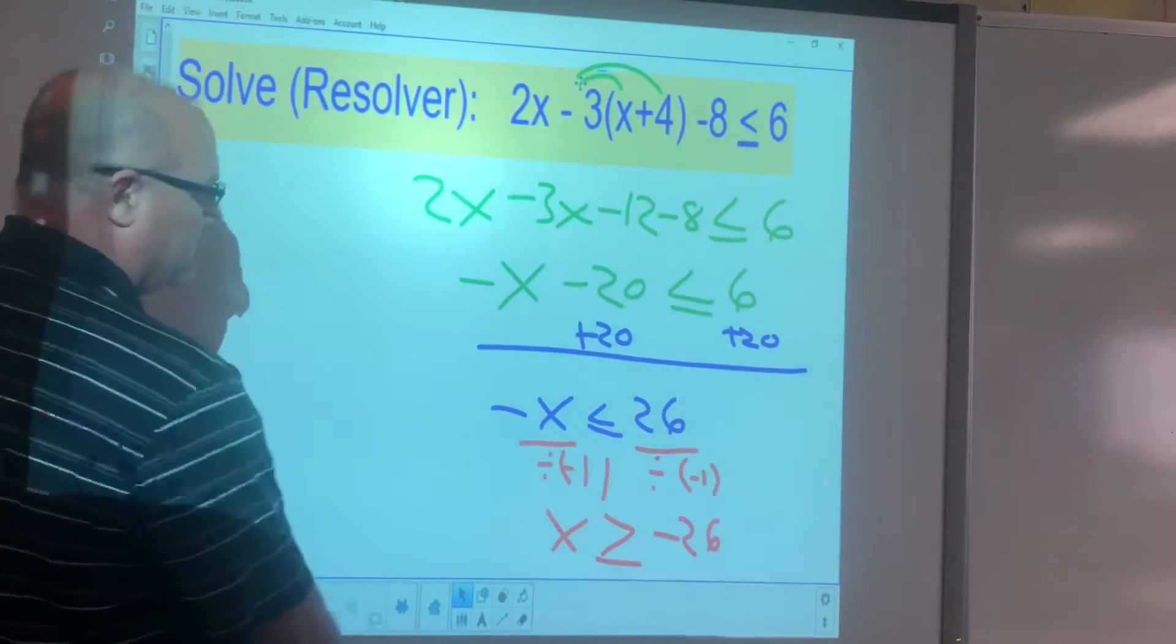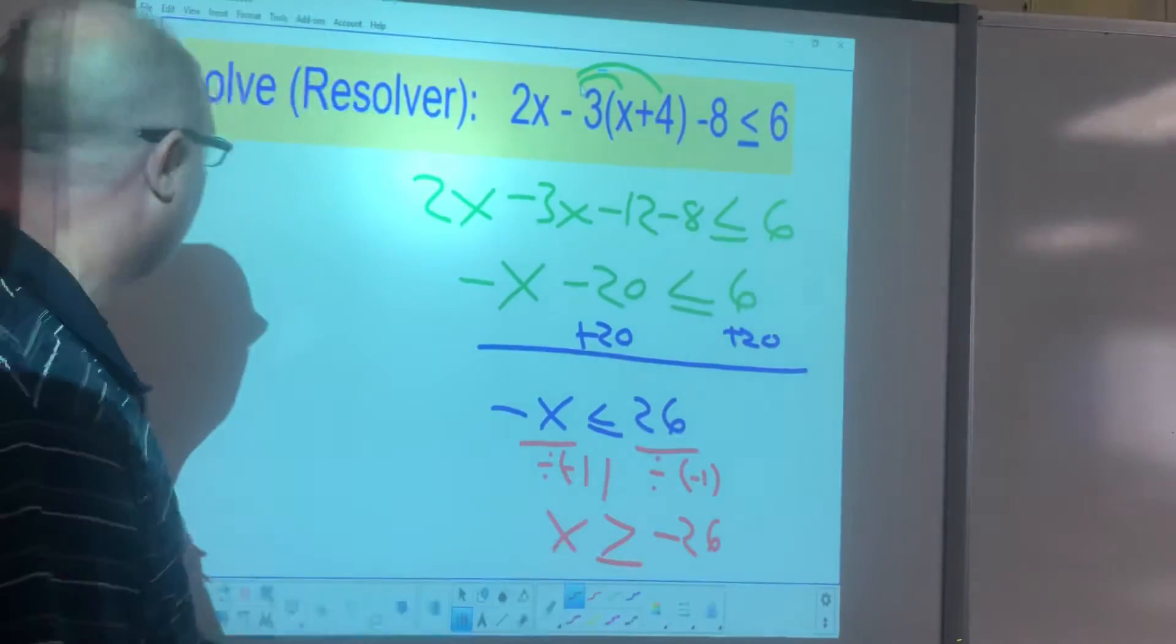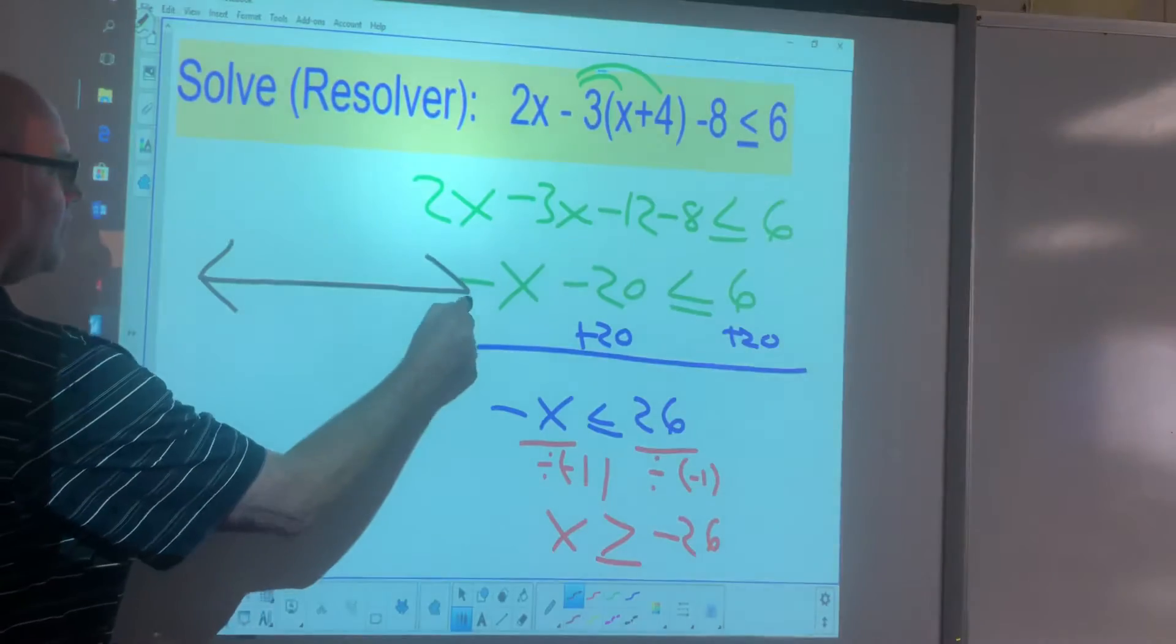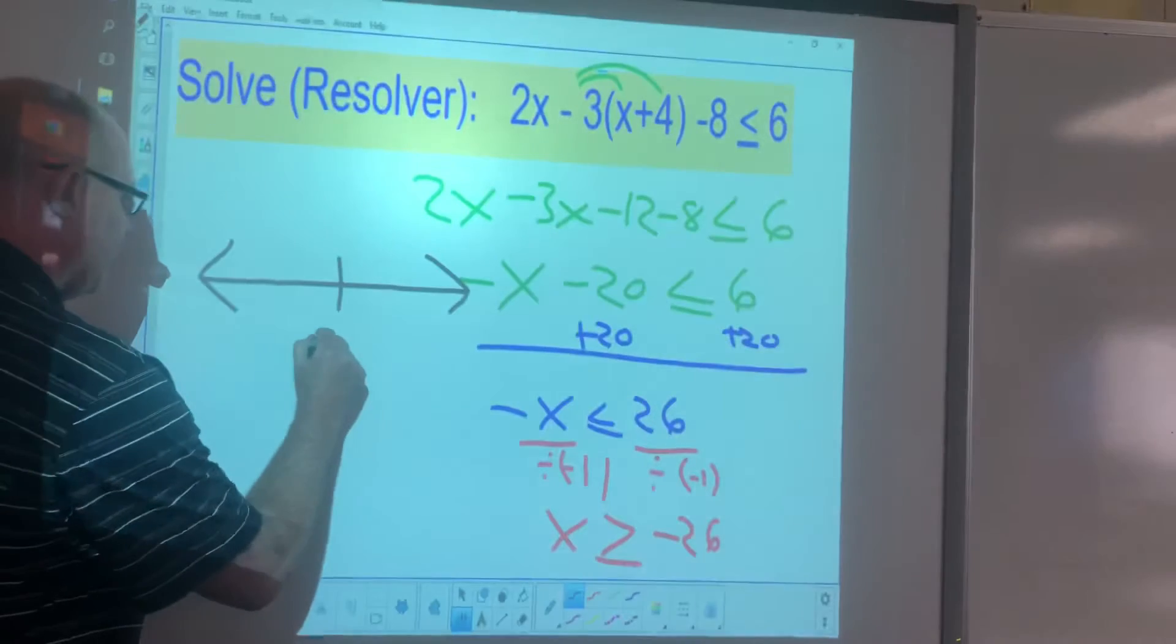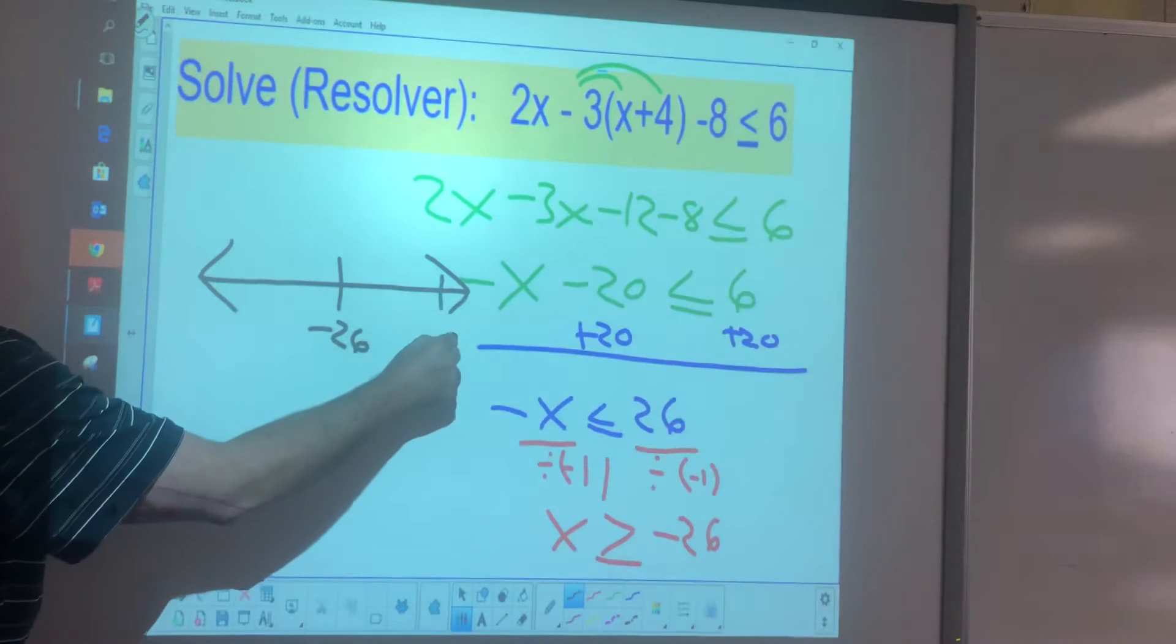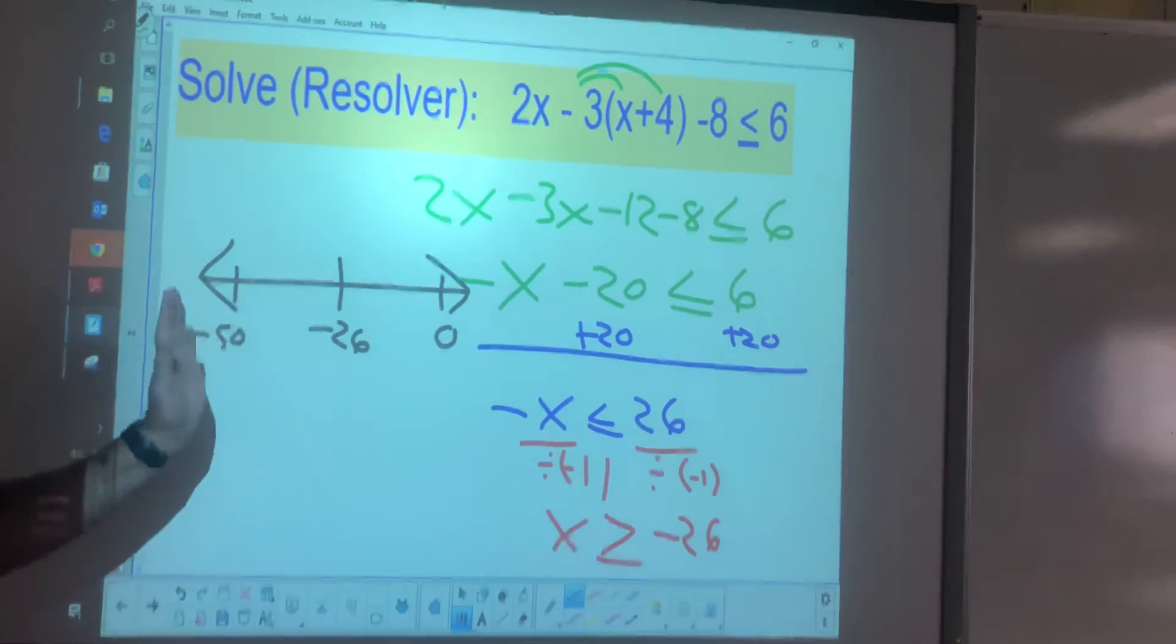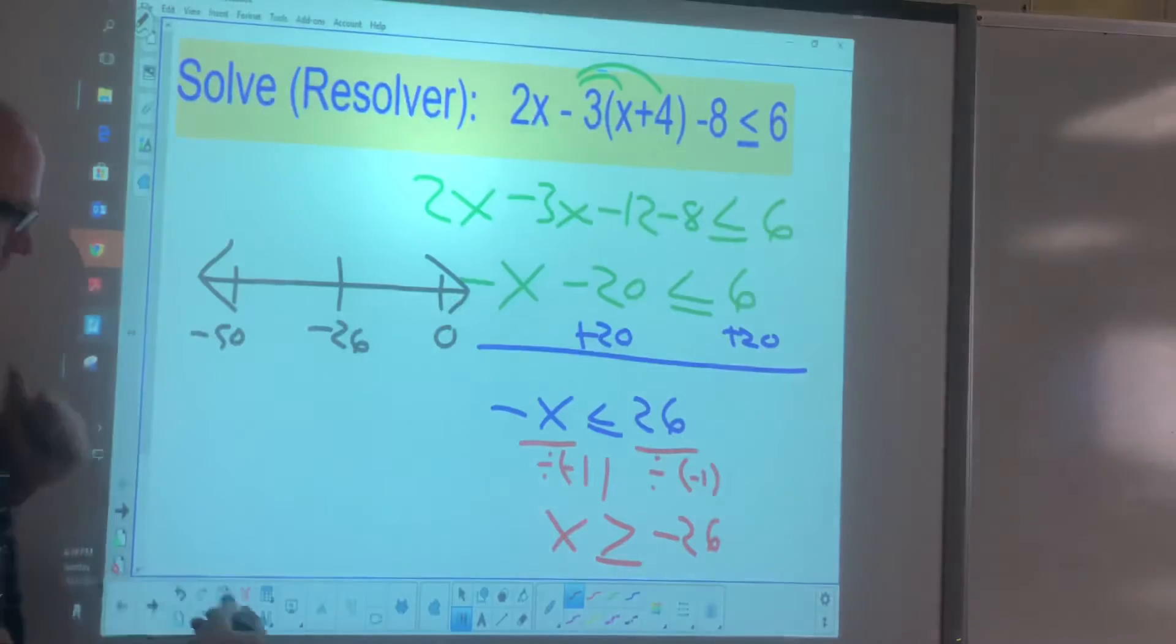Some of you are okay with this part, then you have a hard time, how do you show this as a graph? So we're going to make a generic number line here. In the middle, I'm going to put the dividing point, negative 26. Then I put a number to the right and a number to the left. I'm going to just put zeros over here, and maybe negative 50s over here. Numbers get bigger as you go right, get smaller as you go left.